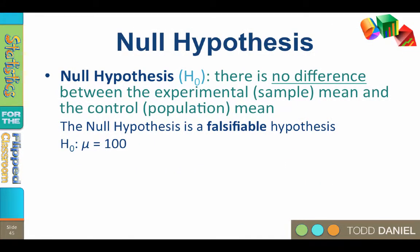The null hypothesis states that there is no difference between the experimental or sample mean and the control or population mean. Therefore any differences between the experimental mean and the control or population mean are due to chance. The null hypothesis is a falsifiable hypothesis. If the experimental sample was drawn from a population with a mean of mu equals 100, then the null hypothesis will state h sub zero: mu equals 100.